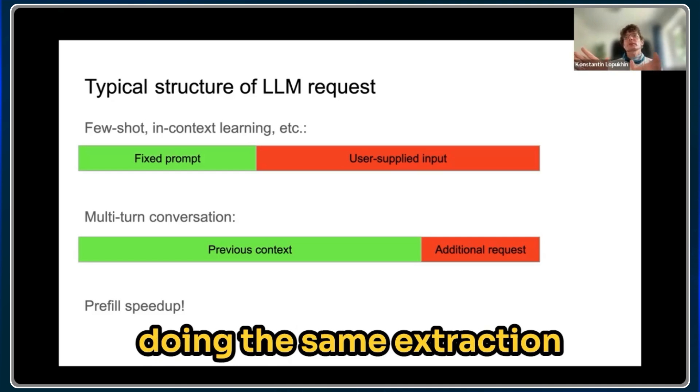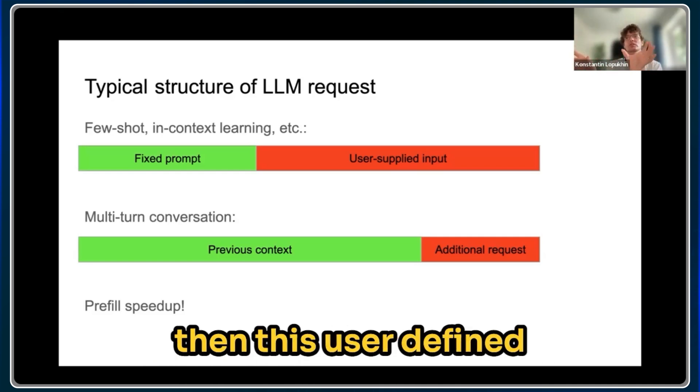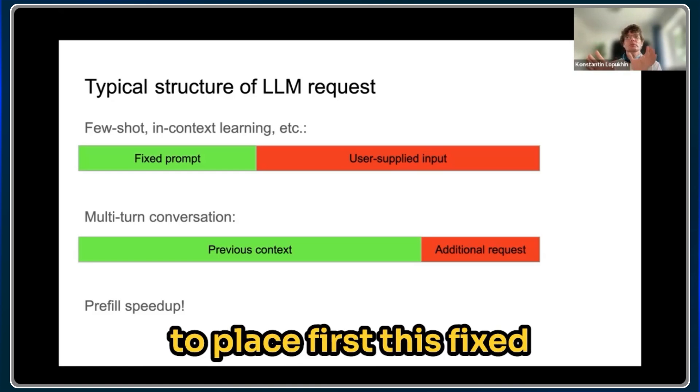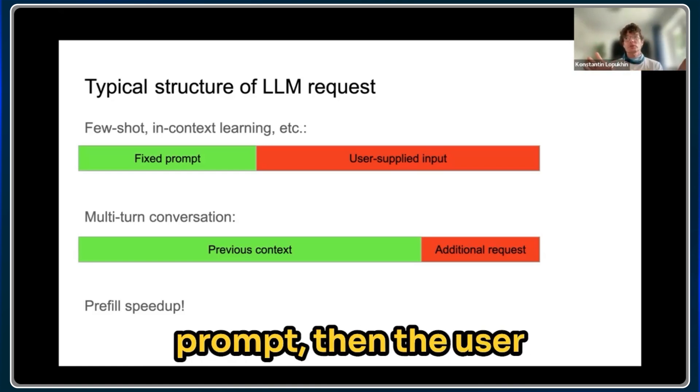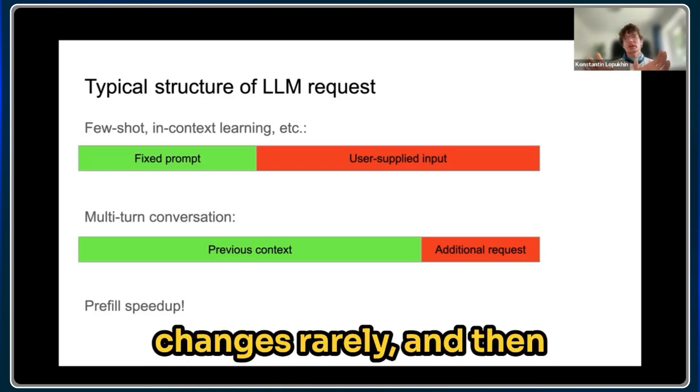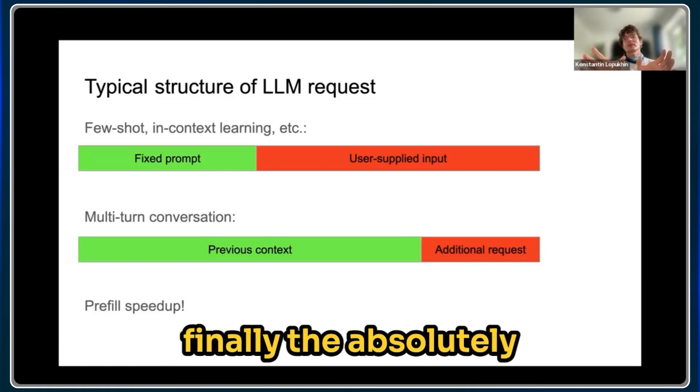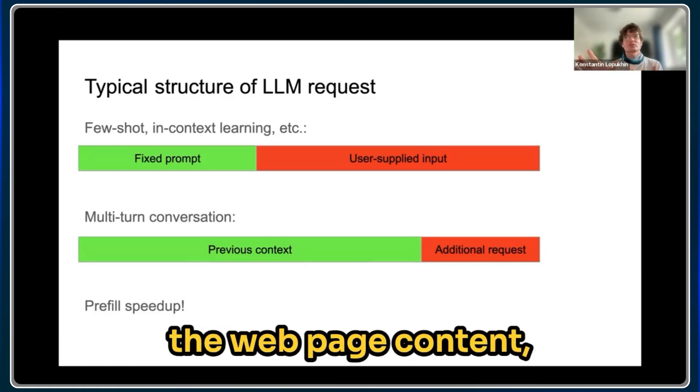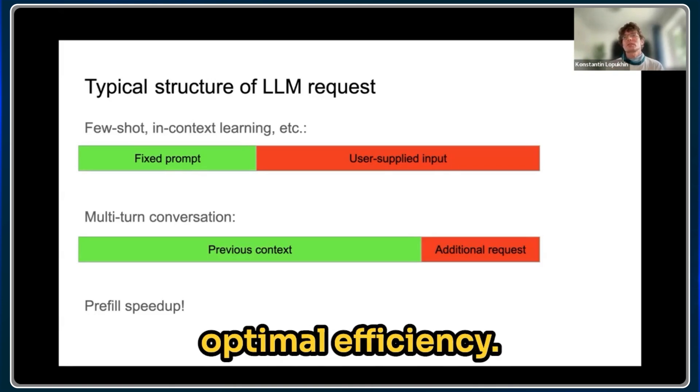if one user is doing the same extraction from multiple web pages, then this user-defined schema is still the same. So for us it's beneficial to place first this fixed prompt, then the user-defined schema which changes rarely, and then finally the absolutely variable part which is the web page content. This ensures optimal efficiency.